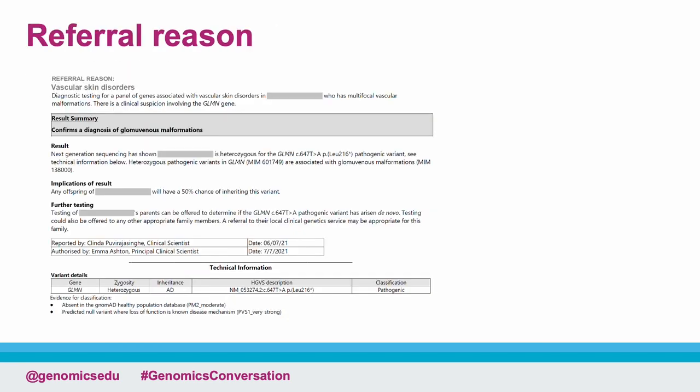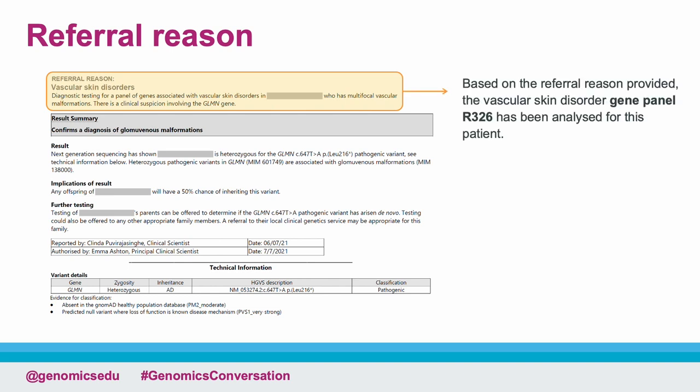The report usually starts with the referral reason and the associated gene panel that has been analysed for the patient. In our example here, it is the Vascular Skin Disorder Panel, or R326. It's important to check this section of the report carefully to ensure that the phenotypic information is correct and correlates with your original request.